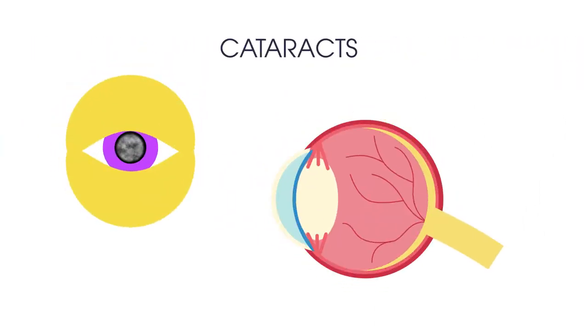The third condition is cataracts. This is when the lens, a small transparent disc inside your eye, develops cloudy patches.